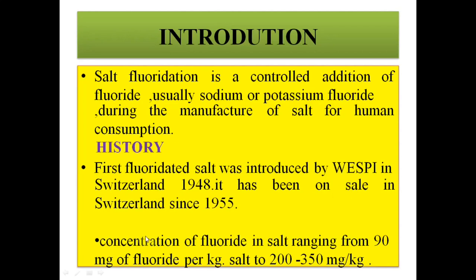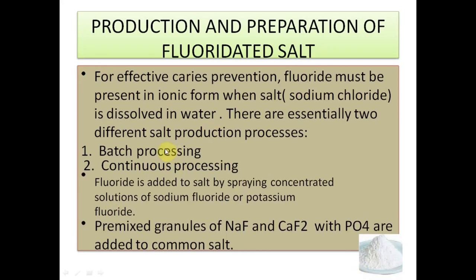Salt fluoridation was started by Wespi in Switzerland in 1948, with fluoridated salt sold from 1955 onwards. Sodium or potassium fluoride is mixed with salt at 90 mg of fluoride per kilogram of salt, or 250–350 mg per kilogram. It can be added by two processes: batch processing and continuous processing. For better caries prevention, fluoride must be present in ionic form when the salt (sodium chloride) is dissolved in water.